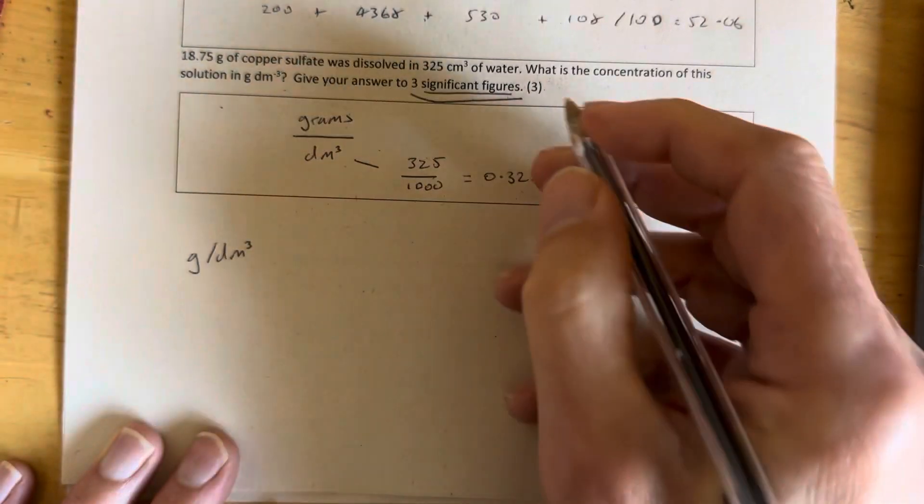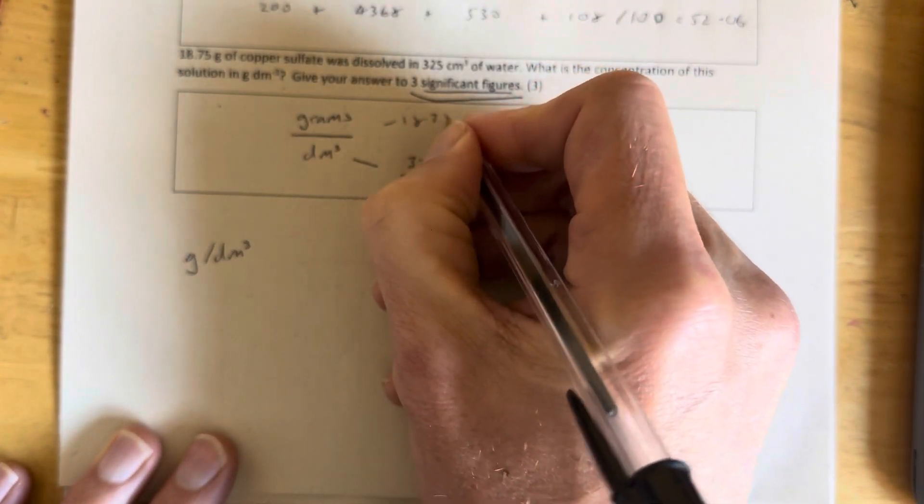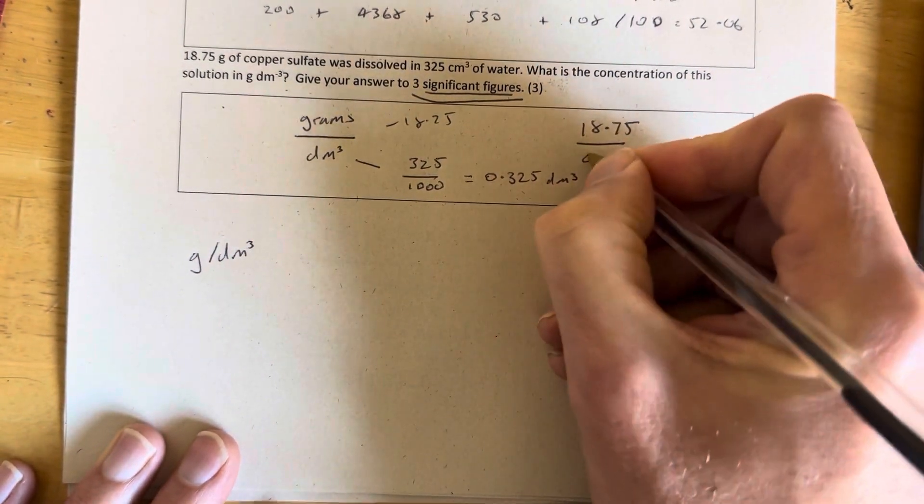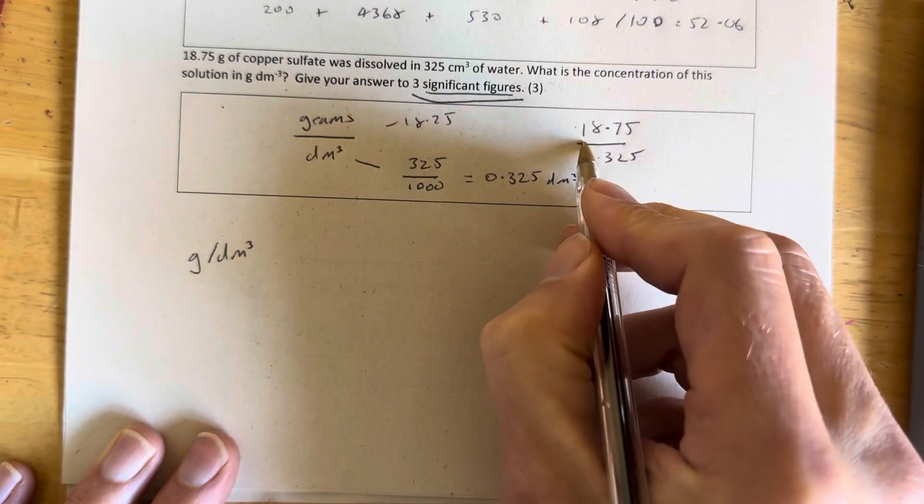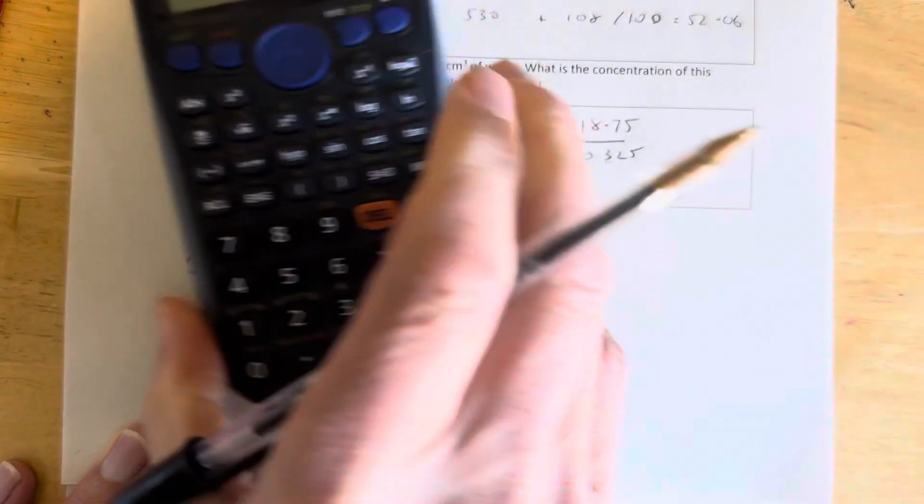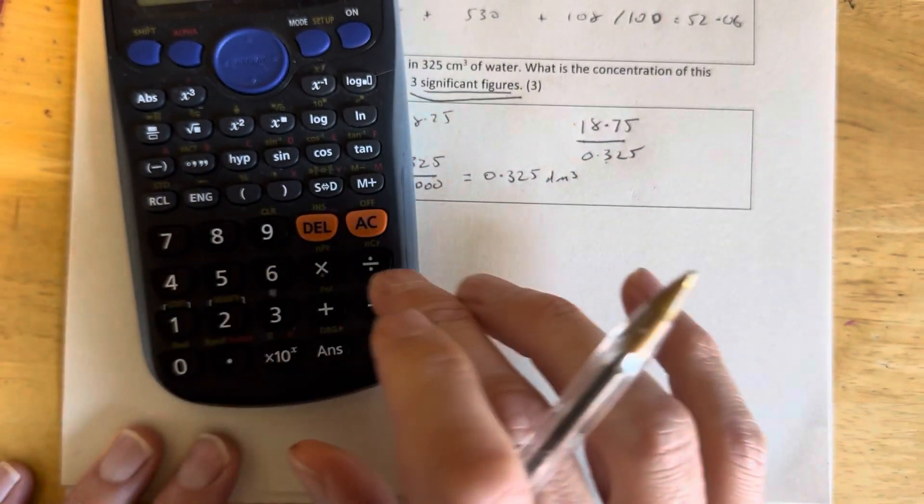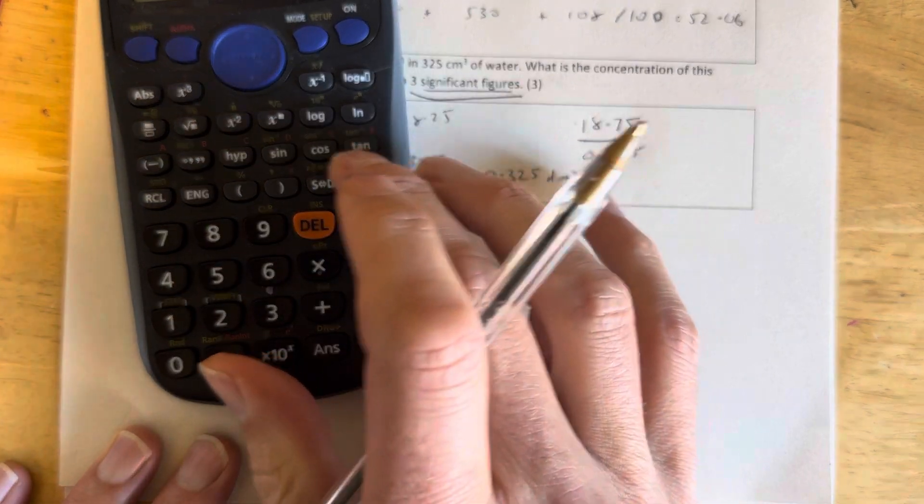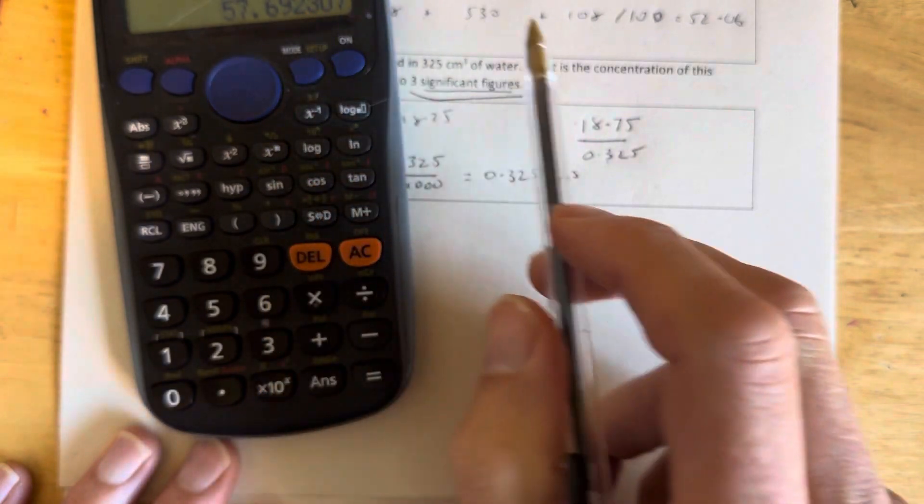Our grams is 18.75, so our grams is going to be 18.75. So that's what we need to divide now to get the answer. 18.75 divided by 0.325 grams per decimetre cubed. Stick it in the calculator, you'll get the answer. So 18.75 divided by 0.325 equals, and it's 52.692307.